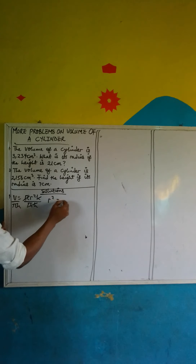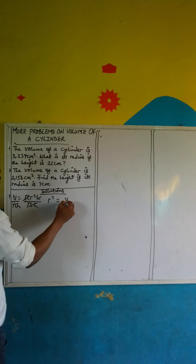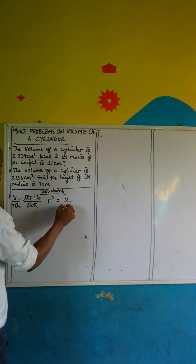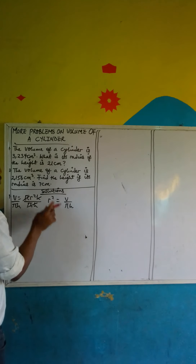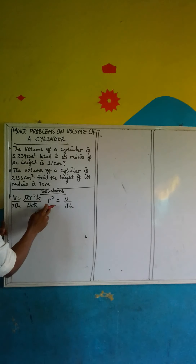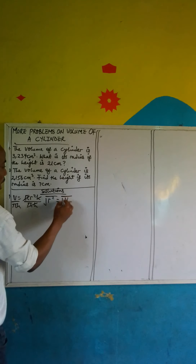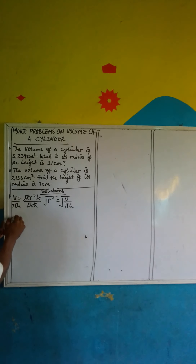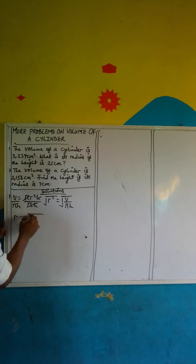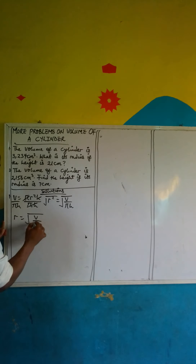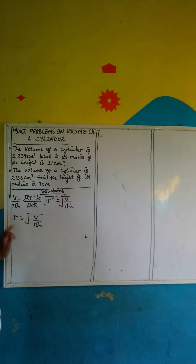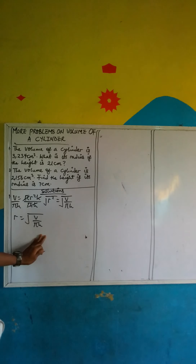So r squared will be equal to Volume over π h. To set r free, we need to take the square root of both sides, so that r will be equal to the square root of Volume divided by π h. Now, let's substitute in our values.